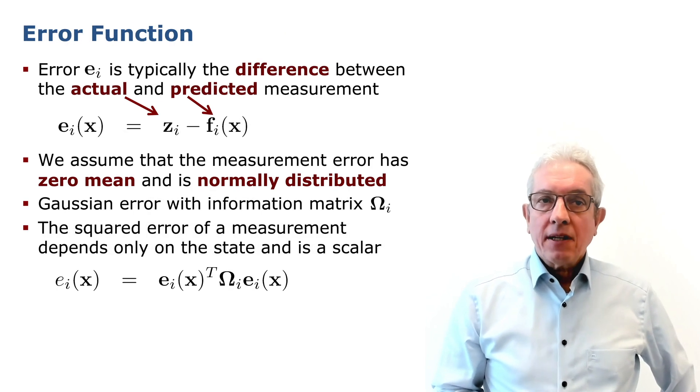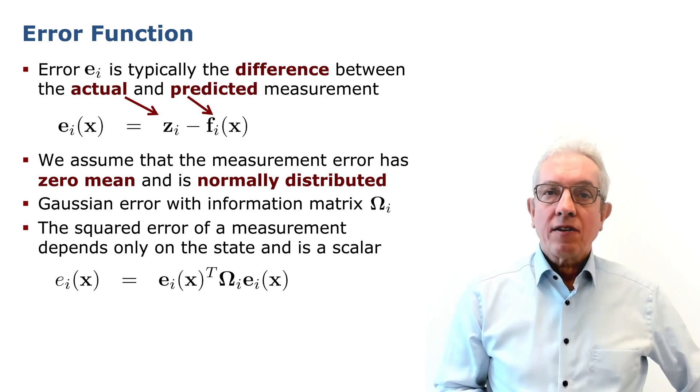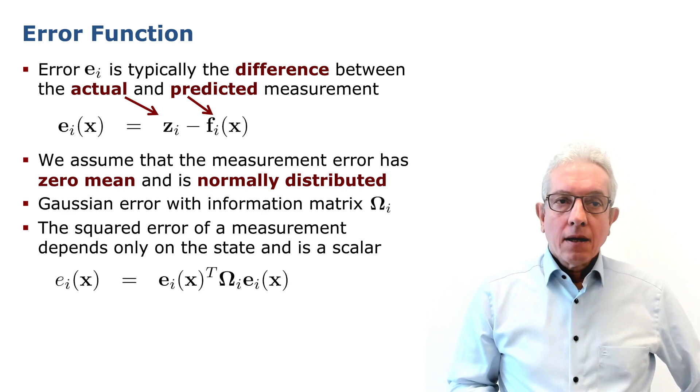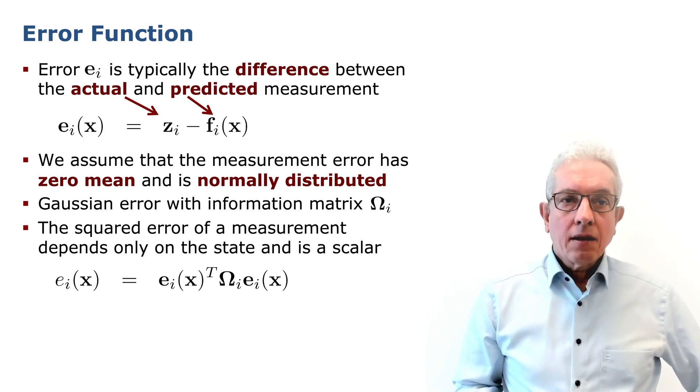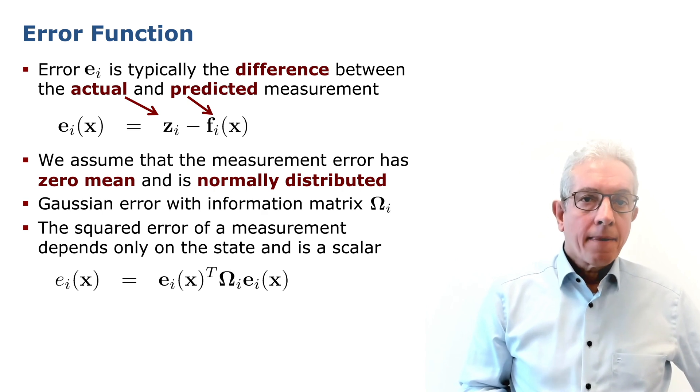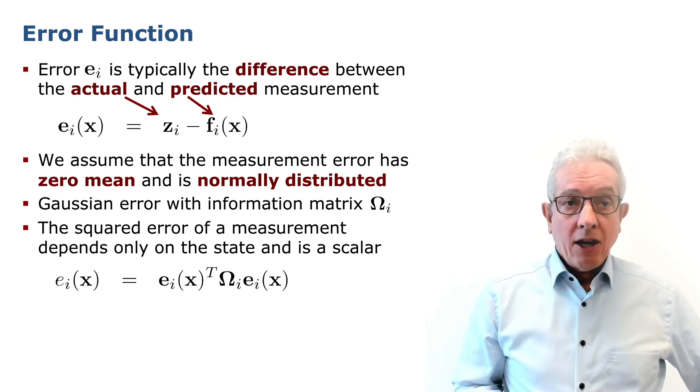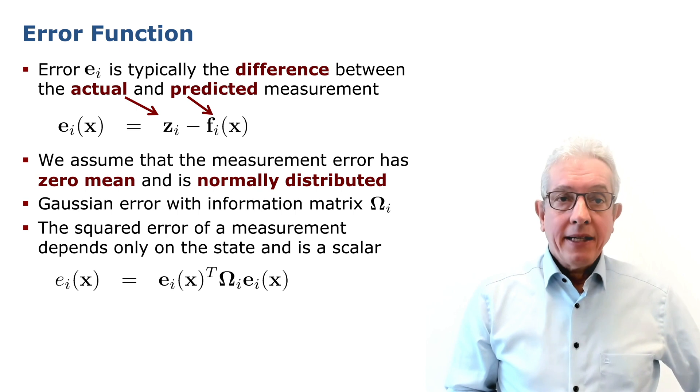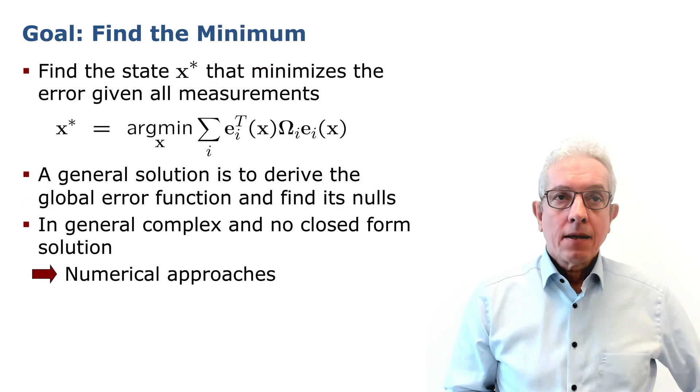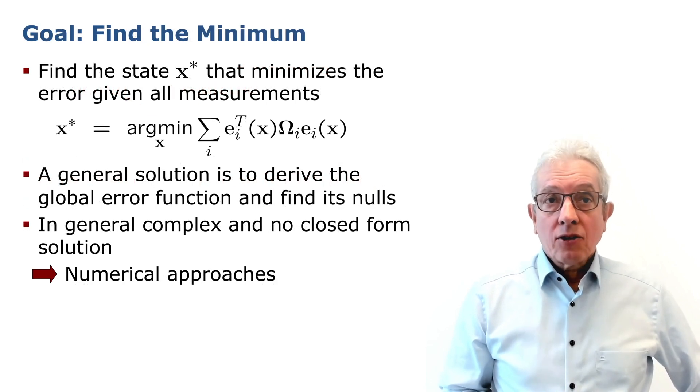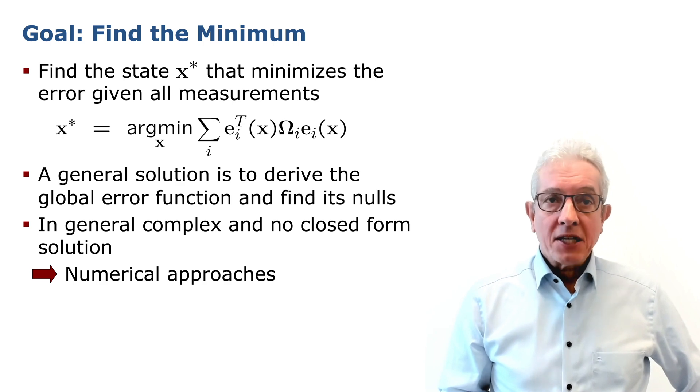The error function basically being just the difference between the two. We assume that the measurement error has zero mean and is normally distributed, and that we have a Gaussian error with information matrix omega i. The squared error of a measurement is a scalar and depends only on the state. Ei of x is basically Ei of x transpose omega i Ei of x.